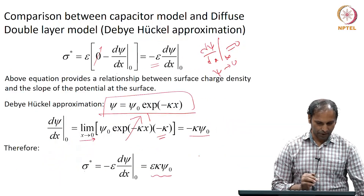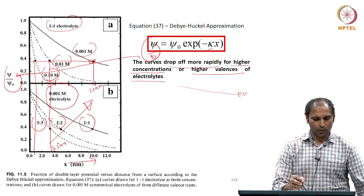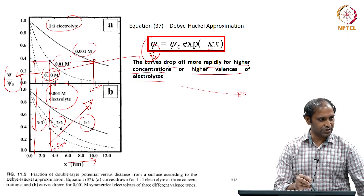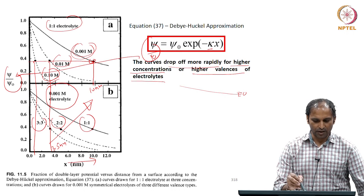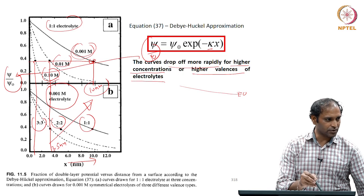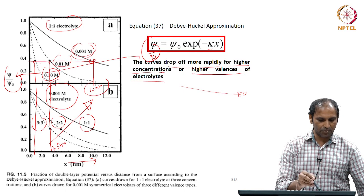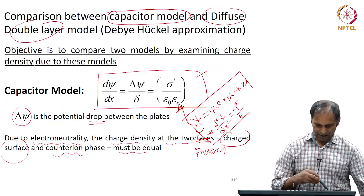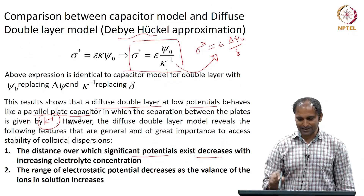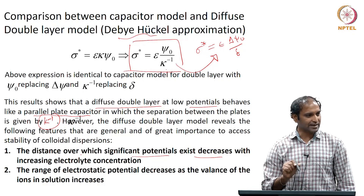This was demonstrated here — because this is a case where the electrolyte concentration is changing. When the electrolyte concentration is 0.001, a particular potential occurs at 10 nanometers, but the same potential occurs at a lower distance when I have a higher concentration of salt, and decreases further at even higher salt concentration. That is the first statement: the distance over which significant potential exists decreases with increasing electrolyte concentration.